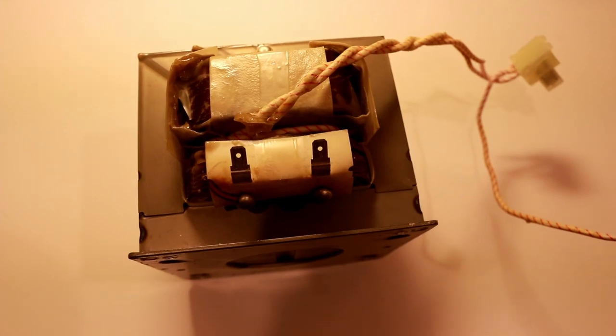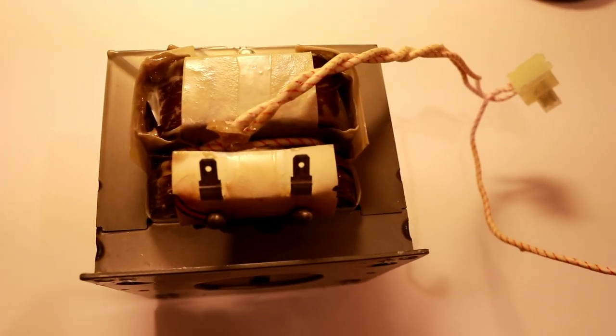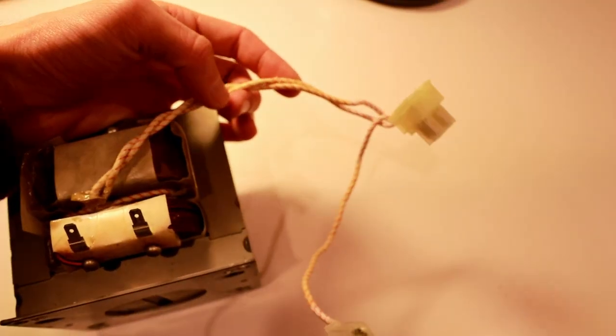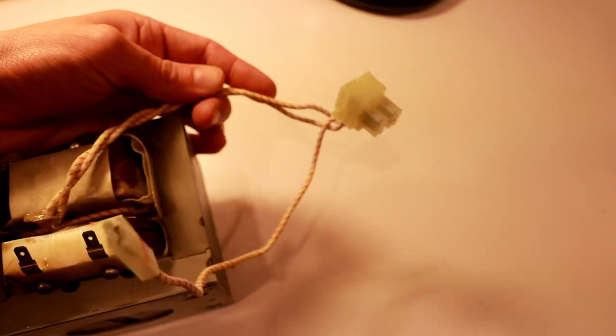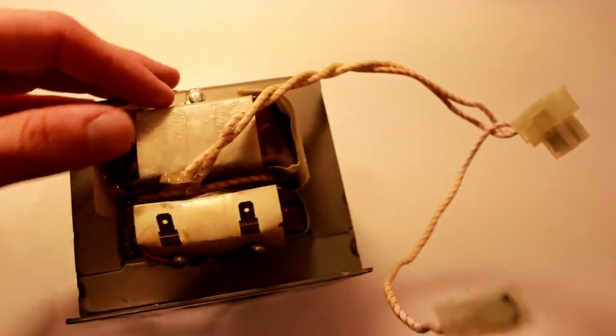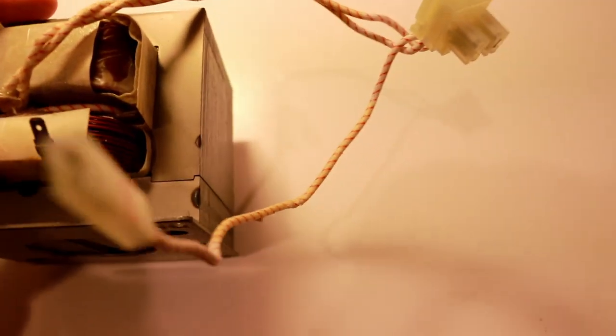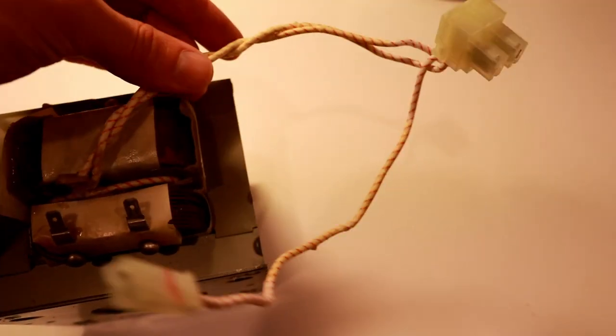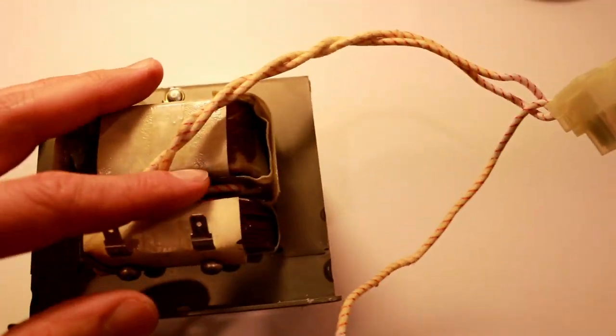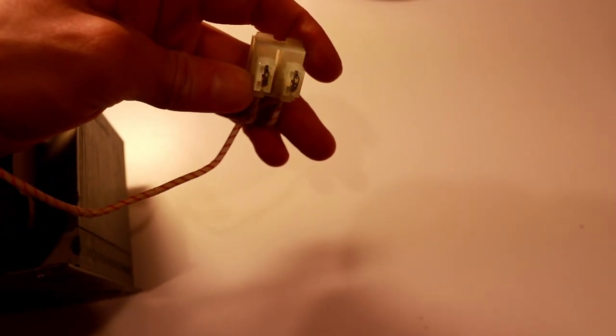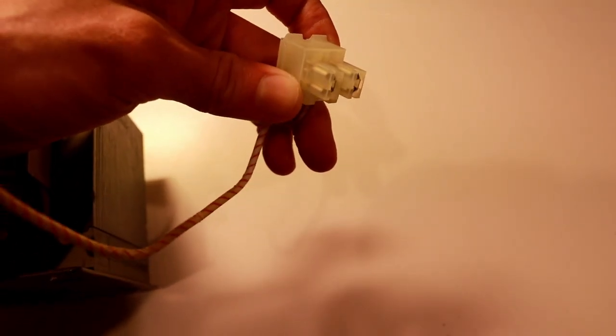It's interesting to note how this transformer is actually constructed. The filament supply winding which supplies approximately six volts to the filament within the magnetron is actually just comprised of several windings of this conductor nearby the secondary coil. There's enough magnetic flux in the core to actually induce voltage on just those few number of windings enough to actually heat the filament on the magnetron filament winding.